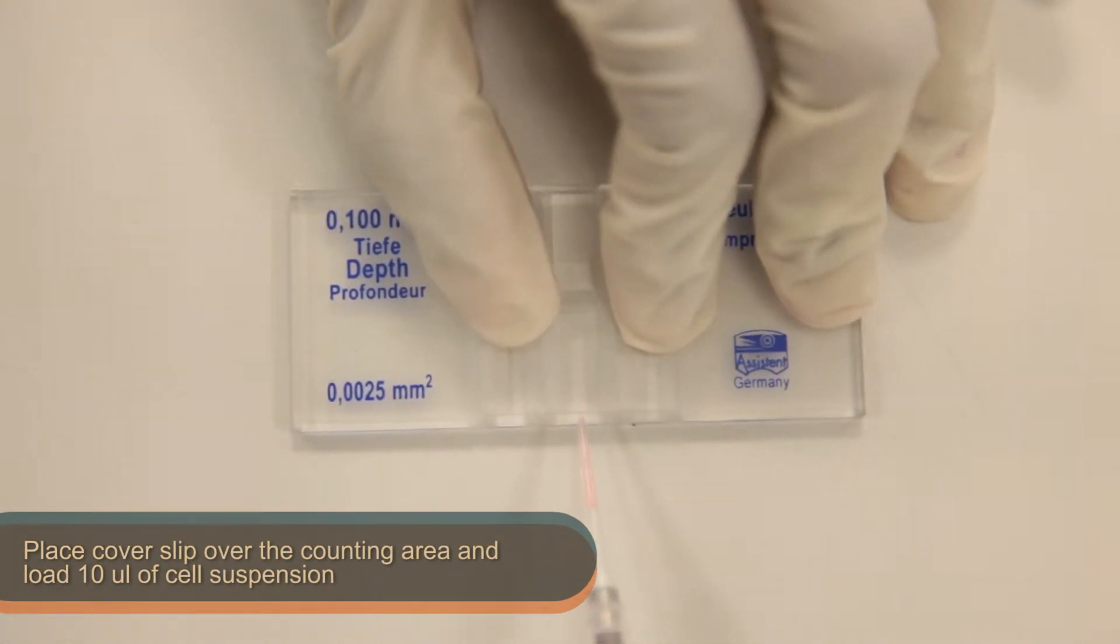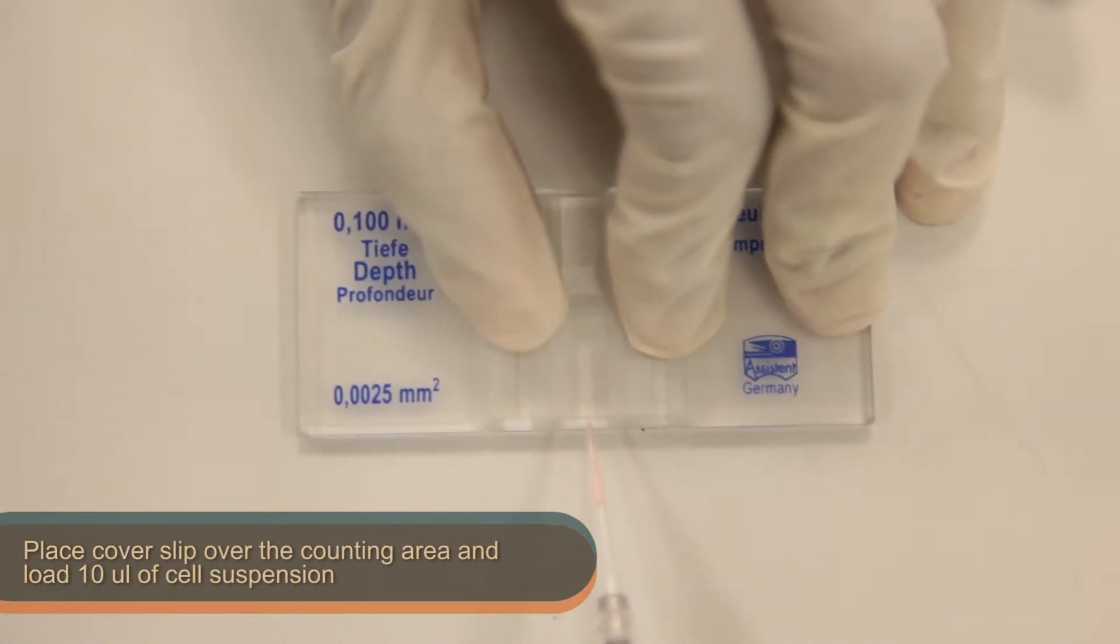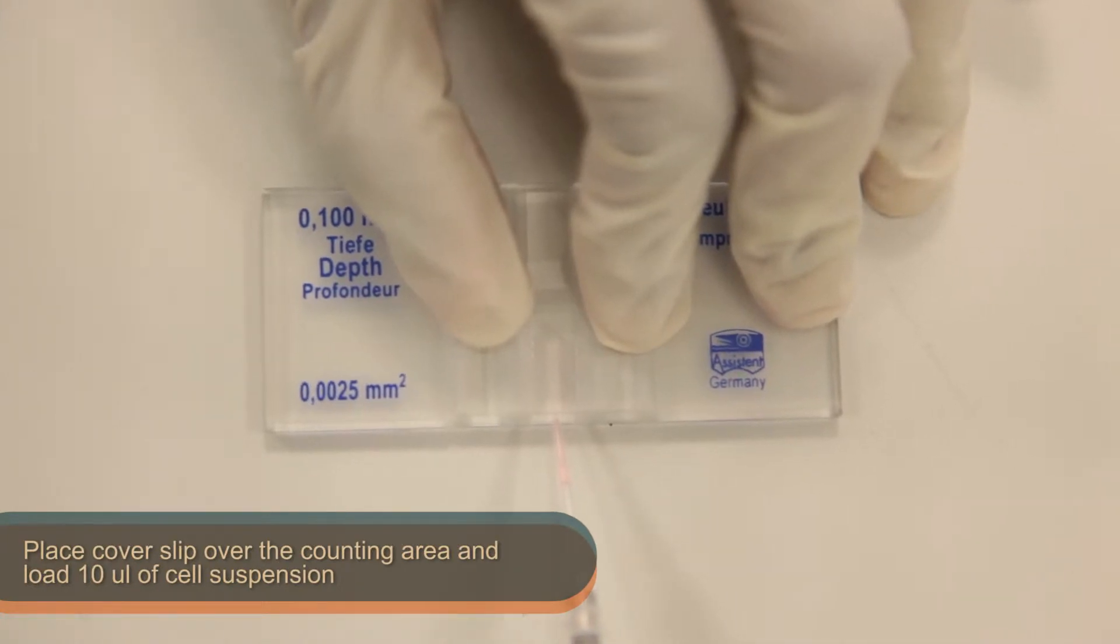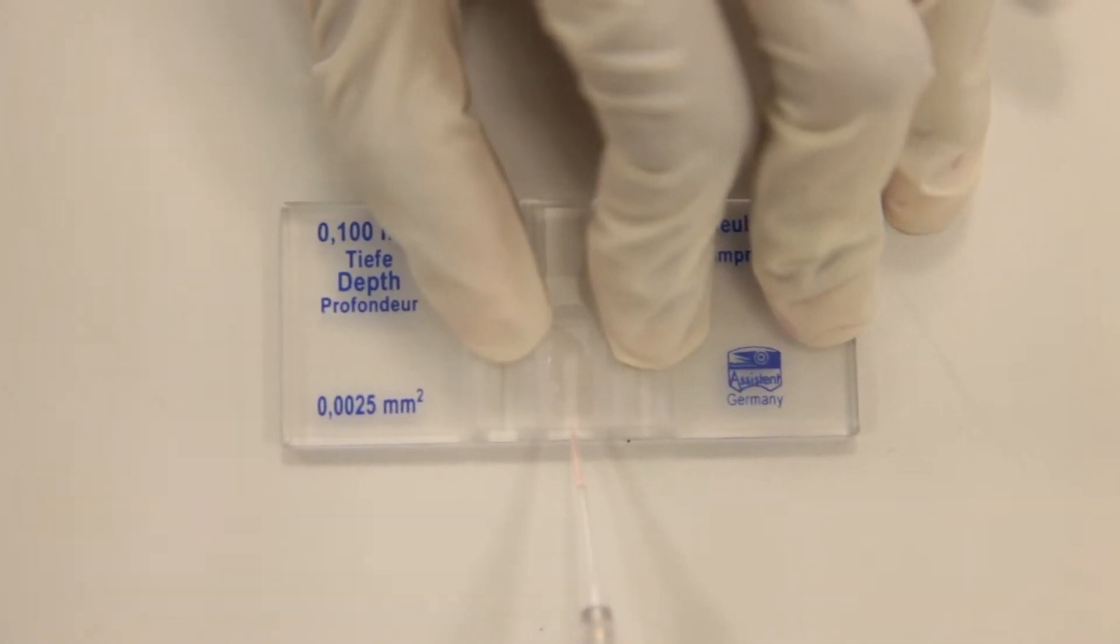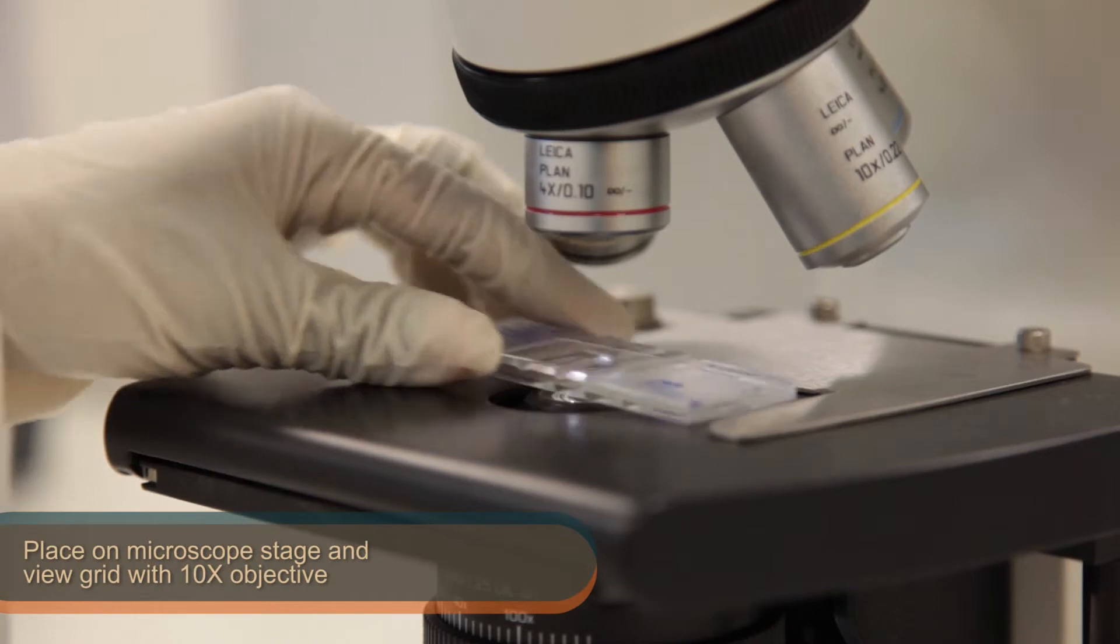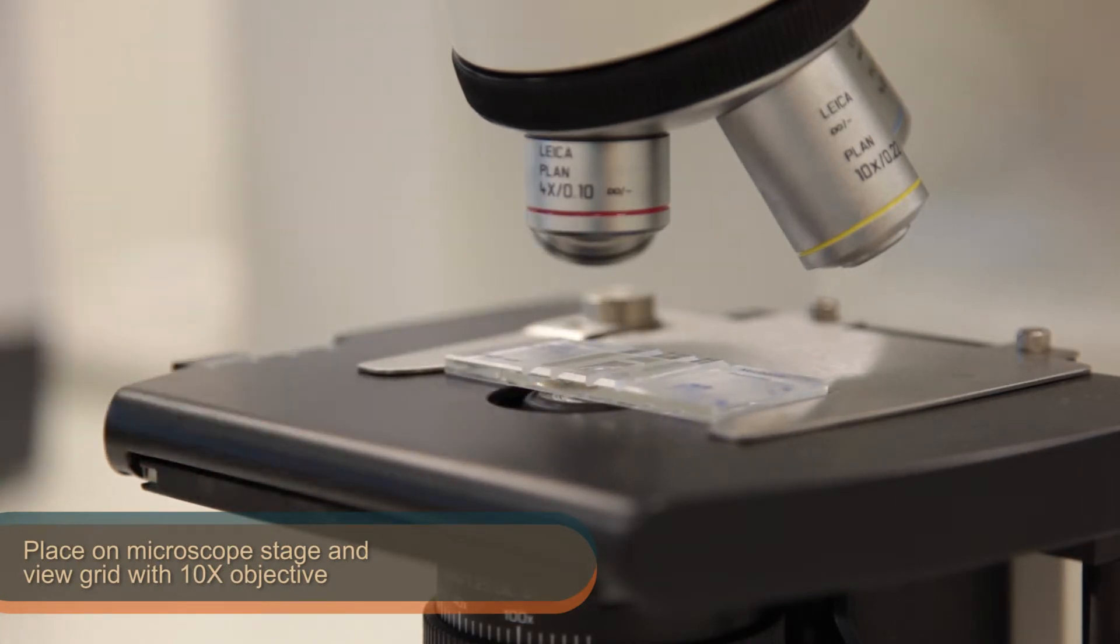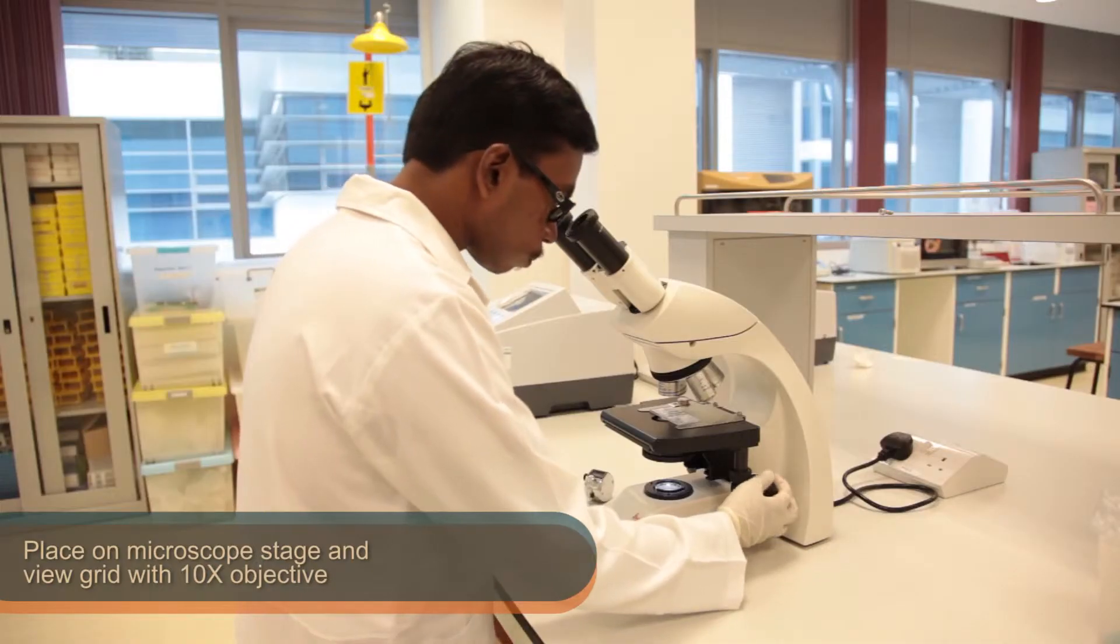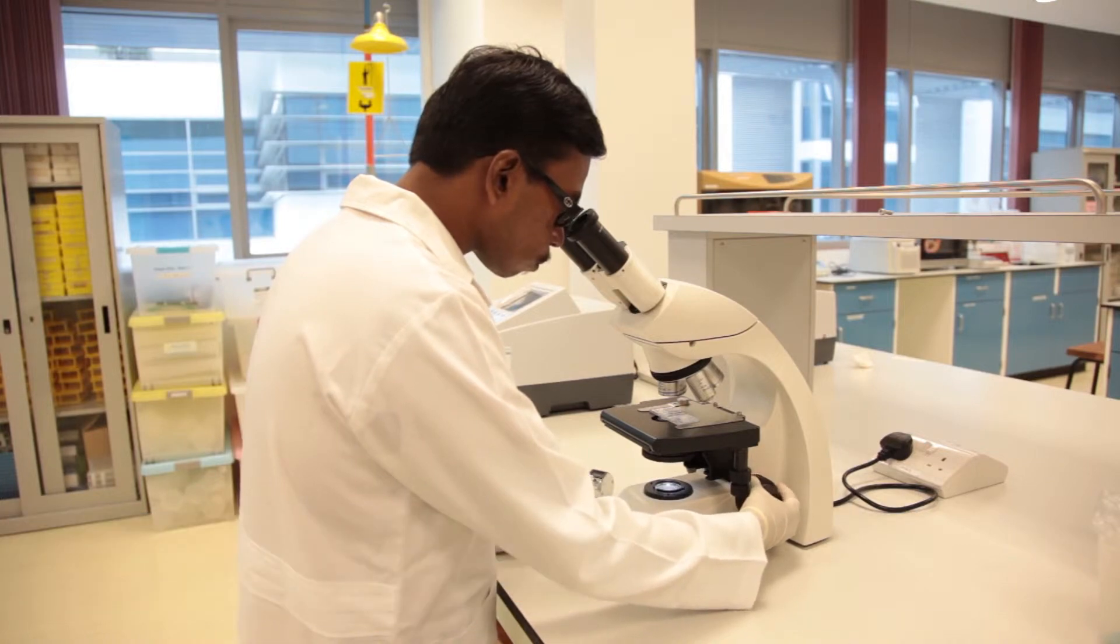Make sure the cells are maintained in ice. Then, place the hemocytometer on the microscope stage and view the counting grid with a 10x objective.